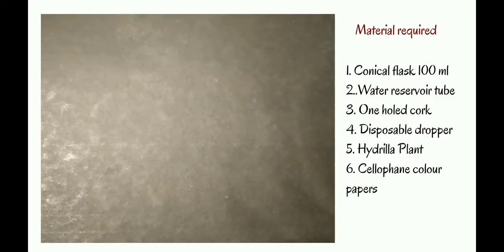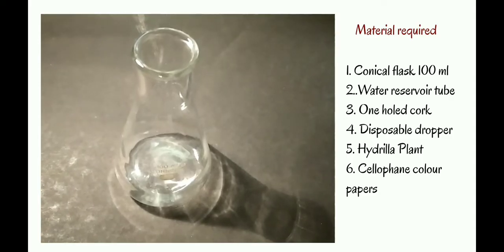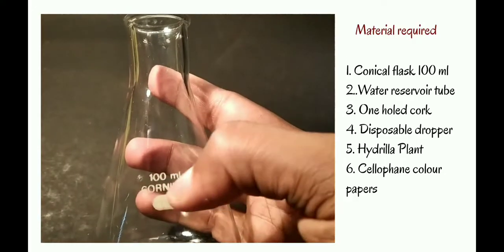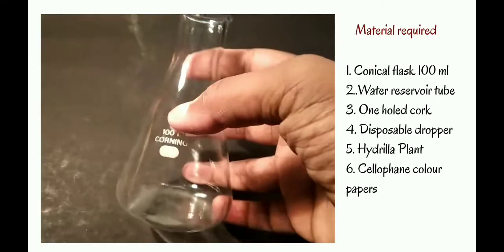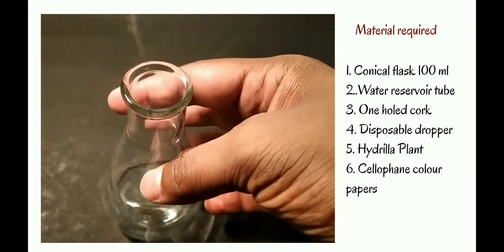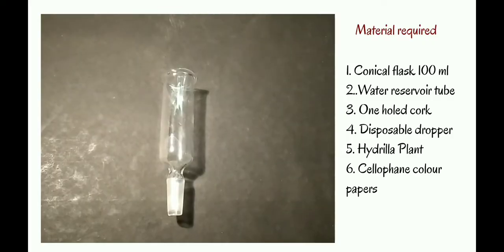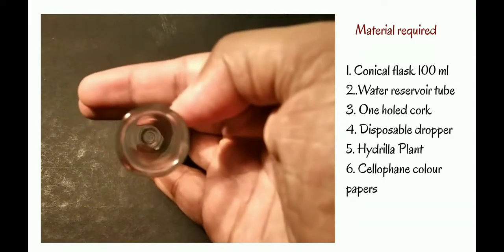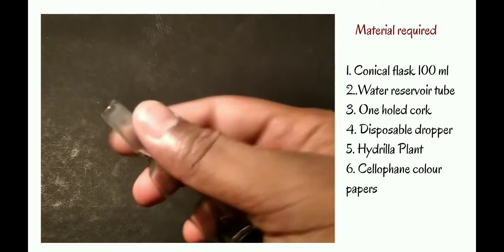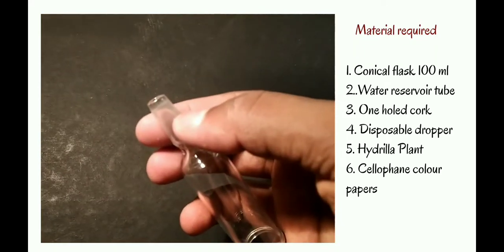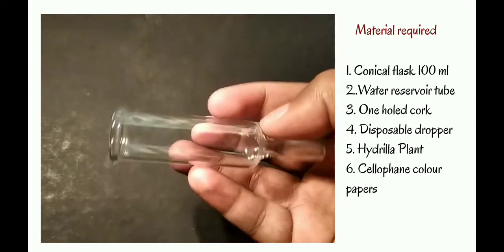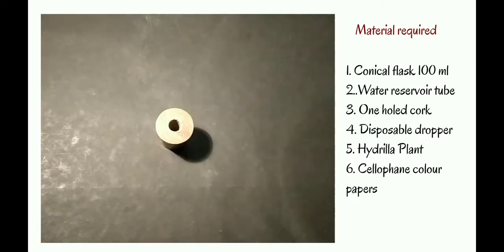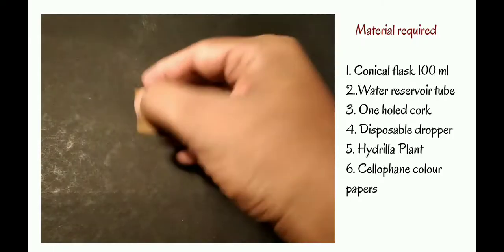The materials required for the experiment are: a conical flask of 100 ml capacity, a water reservoir tube which you can also see in Ganong's photometer, and a one-hole rubber cork which is tightly fixed to the conical flask.